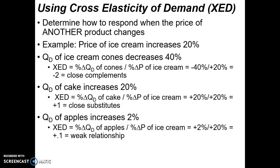Thinking about this practically: ice cream cones are clearly complements. When the price of ice cream goes up, the demand for ice cream goes down, and so the demand for ice cream cones also goes down. Meanwhile, if the price of ice cream goes up and the demand for ice cream goes down, the demand for cake might go up a little, because people may be looking for a dessert alternative.